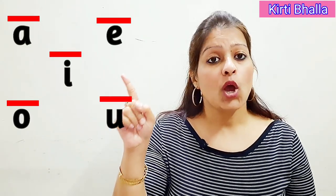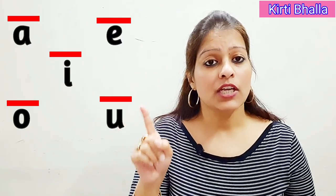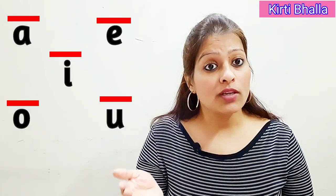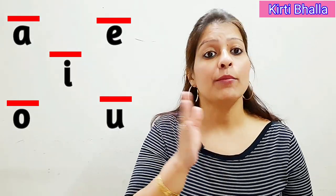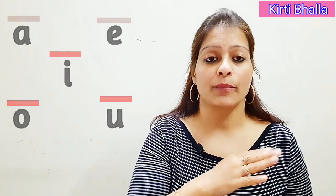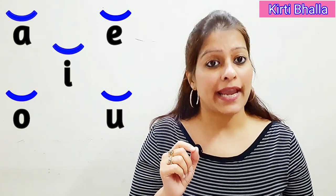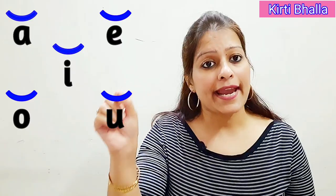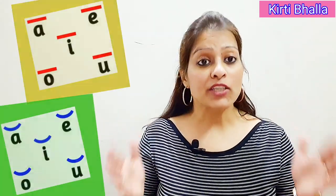When you see a sleeping line on top of any of these five vowel letters, it means you have to speak the long sound. The long sound is the letter name — the name of the letter is the long sound. When you see a small arc on top of any of these vowels, it means you have to speak the short sound. The short sound is the actual sound of the letter.